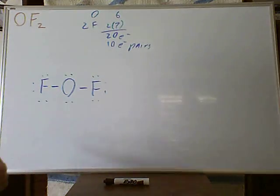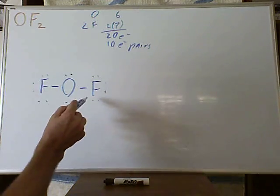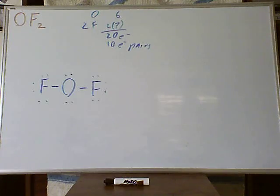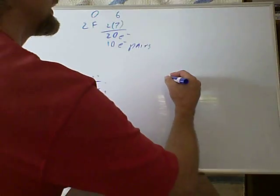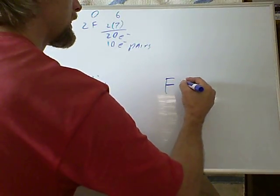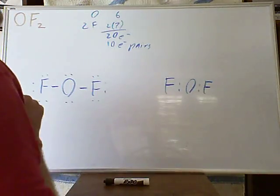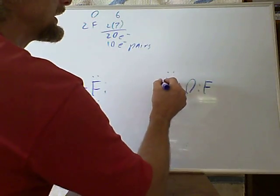So we put in all the valence electrons, we see that each of the atoms has 4 pairs or 8 electrons. The other way that we could have drawn this is drawing dots instead of lines for the bonding electrons.